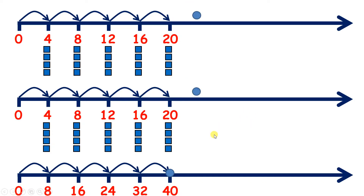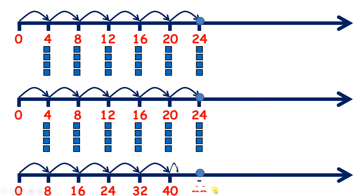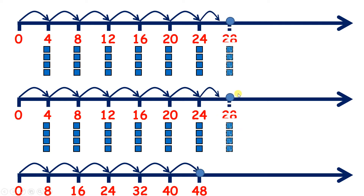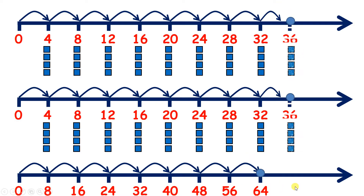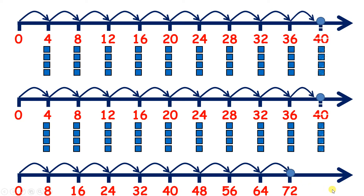So carrying on, we have 48. Another 4 on each line gives us 56, 64, 72, and 80. So on the bottom line, we have our 8 times table, and we can say that we got our 8 times table by doubling our 4 times table.